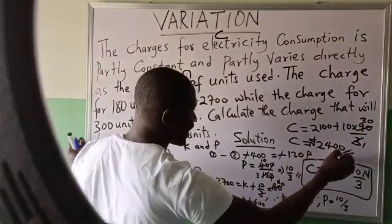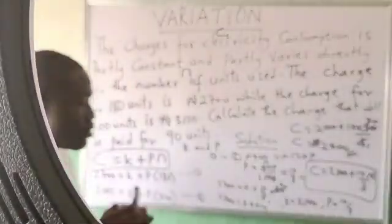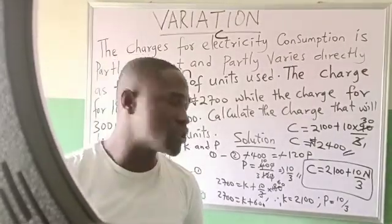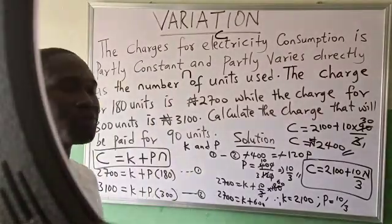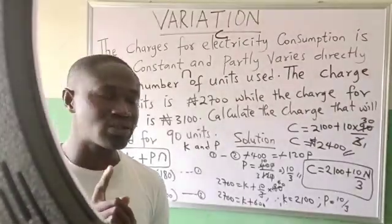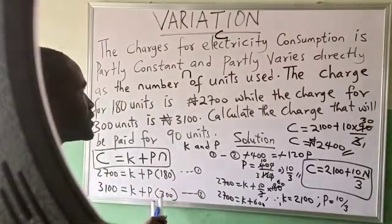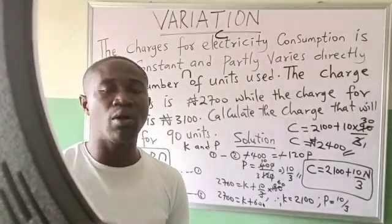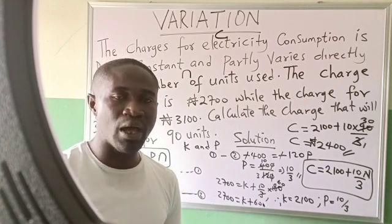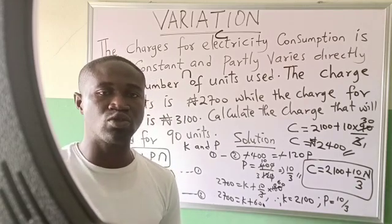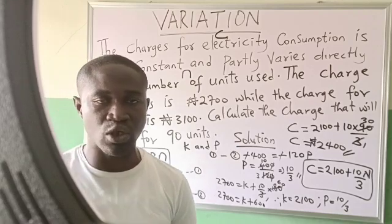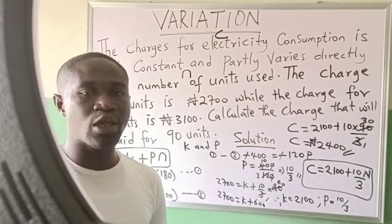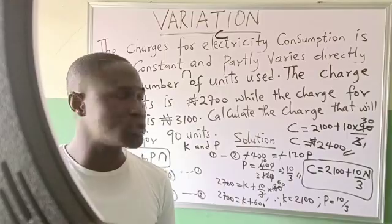That will be the final answer. Most of the time, the elimination method is used to solve the simultaneous equation that we arrive at from partial variation. Have it in mind to use the elimination method to solve the simultaneous equation to make it easier for you. Thank you for watching the video.